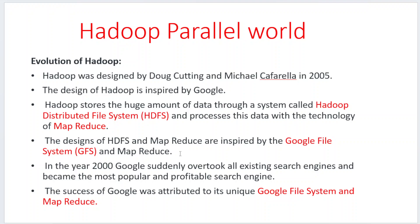Whenever they started a project called Nutch, they came across two research papers developed by Google. However, Google did not reveal all the complete algorithms and details in their research papers. Later, they found these papers were completely relevant to their project Nutch, and that's how they developed the Hadoop project. As for the name, Doug's son had a toy elephant called Hadoop, so they gave that same name to their project.